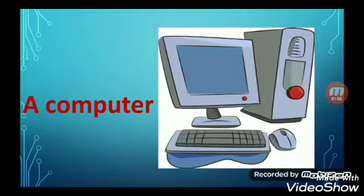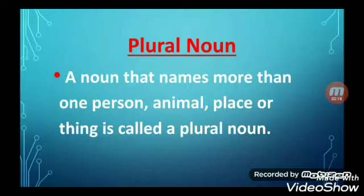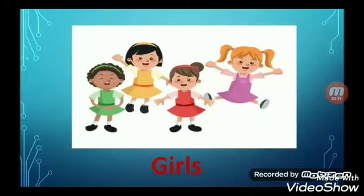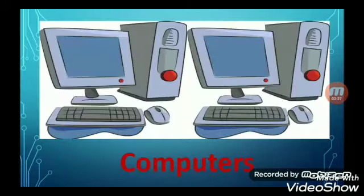Now let us move on to plural nouns. A noun that names more than one person, animal, place or thing is called a plural noun. For example: girls, elephants, buildings and computers. These examples all refer to more than one noun, so they are all plural nouns.